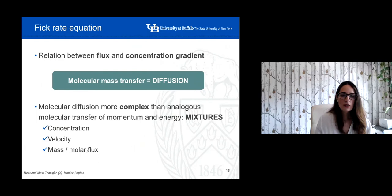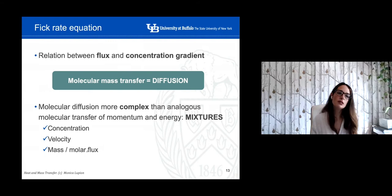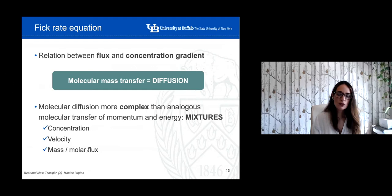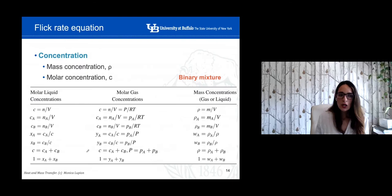It seems clear that there is a relationship between mass flux and the concentration gradient — the higher the concentration gradient, the higher the molar flux. Similarly in heat transfer, the higher the ΔT the higher the heat flux. But the main difference is that in molecular diffusion it's a little more complex than the analogous transfer of momentum or energy, because we have to consider the presence of all elements in the mixture.